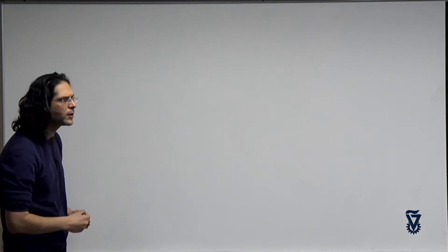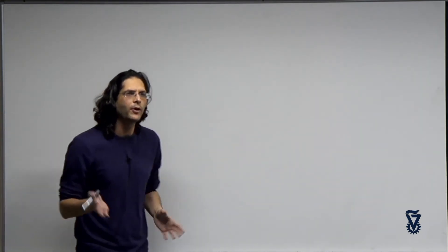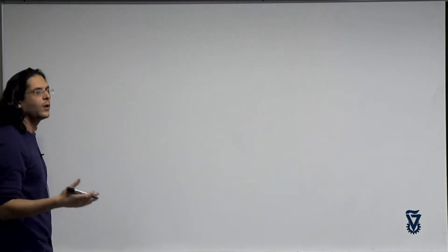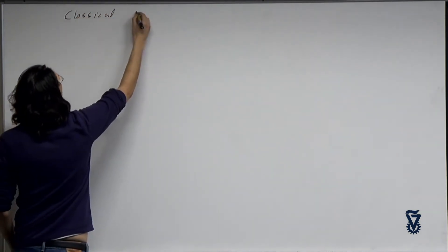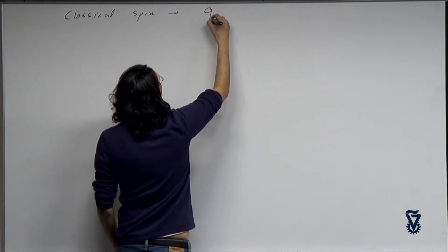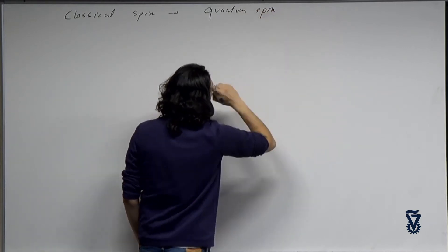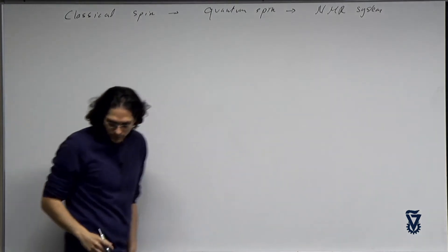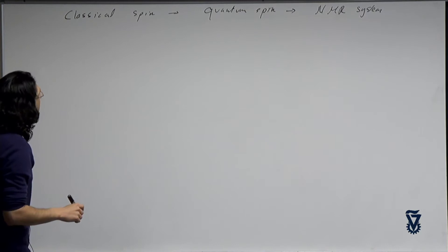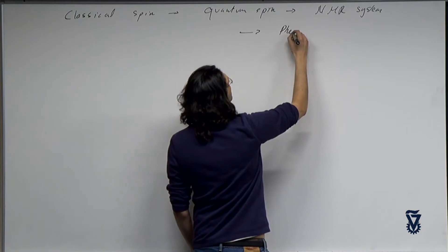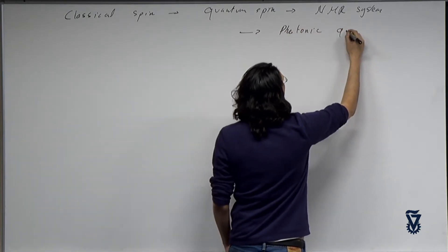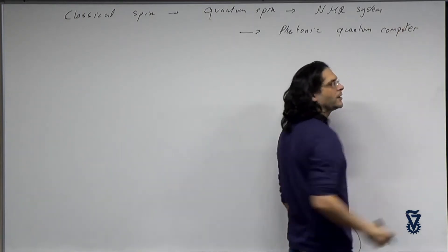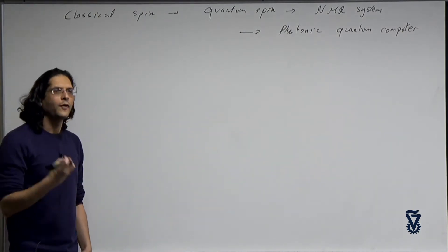Welcome back from the break. We're done with the NMR part. You've got the tools to continue with NMR. After the quantum information part, we looked at the classical spin, then moved on to a quantum spin, and that gave us the tools to talk about the NMR system. Now we're going to take a path that will lead us eventually to a photonic quantum computer — a model for a quantum computer that uses photons as the qubits.